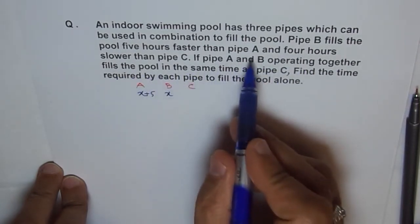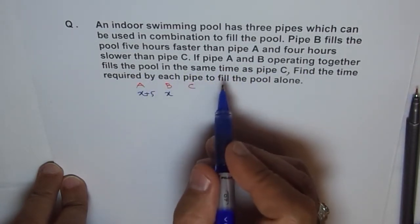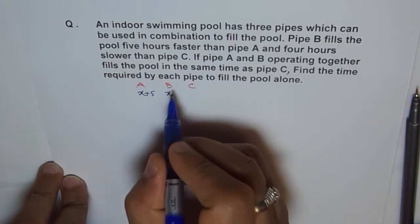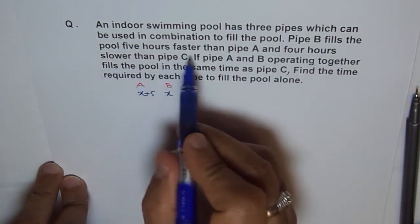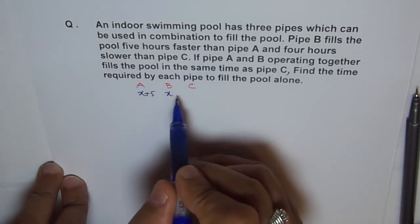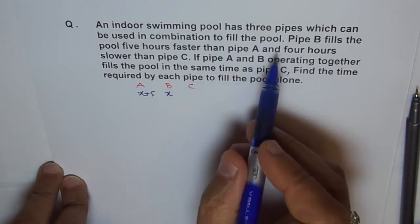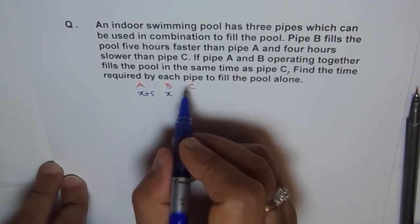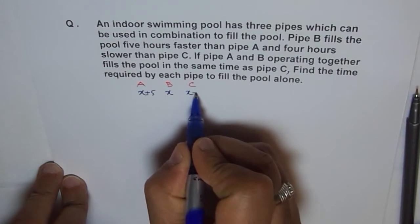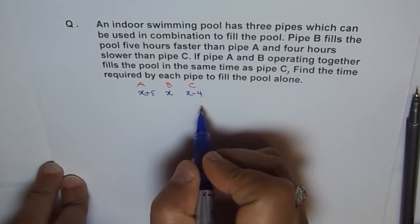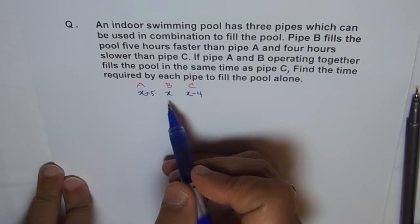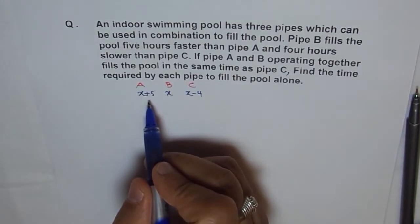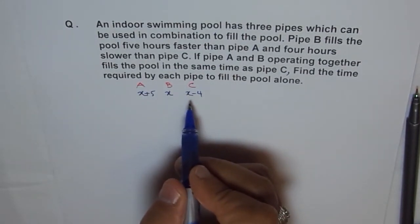Pipe B is four hours slower than pipe C, meaning pipe C is the fastest — it takes much less time. So if pipe B takes X hours, pipe C takes X minus four hours. To summarize: let pipe B take X hours; then pipe A takes X plus five hours and pipe C takes X minus four hours.